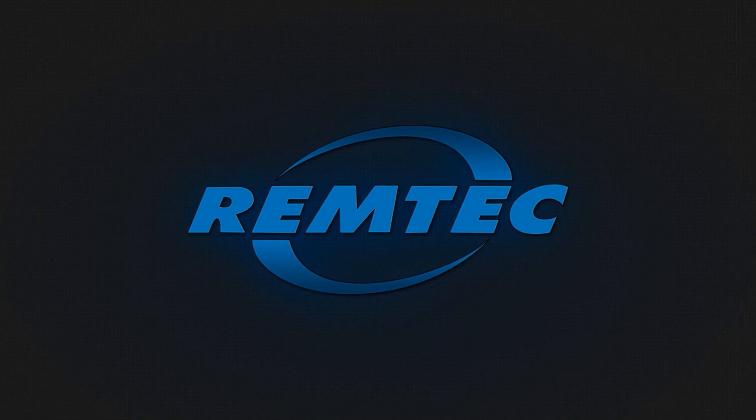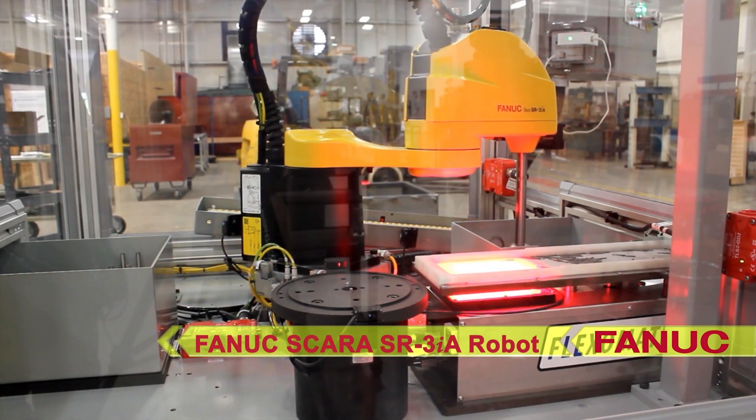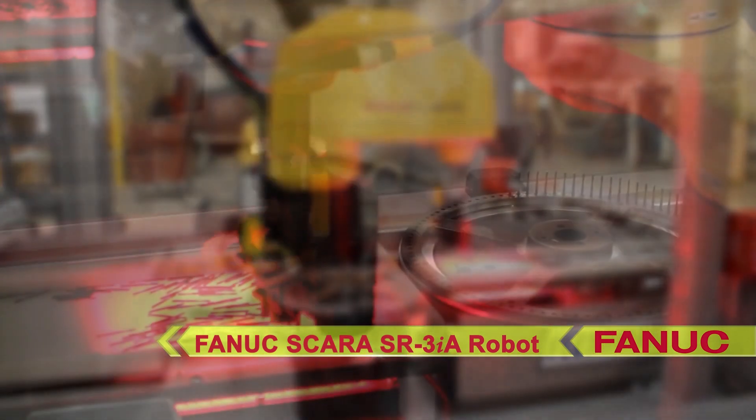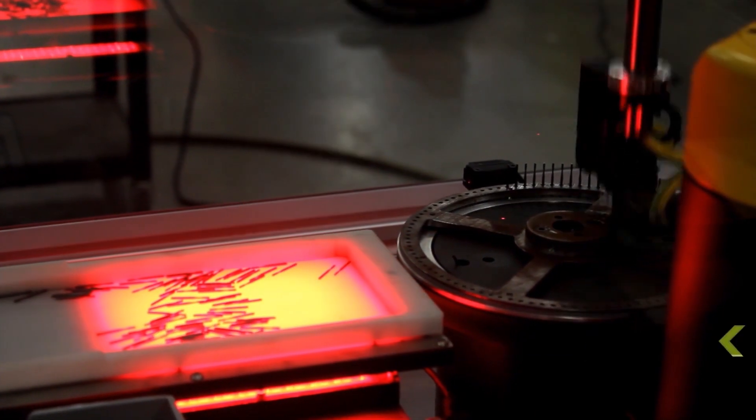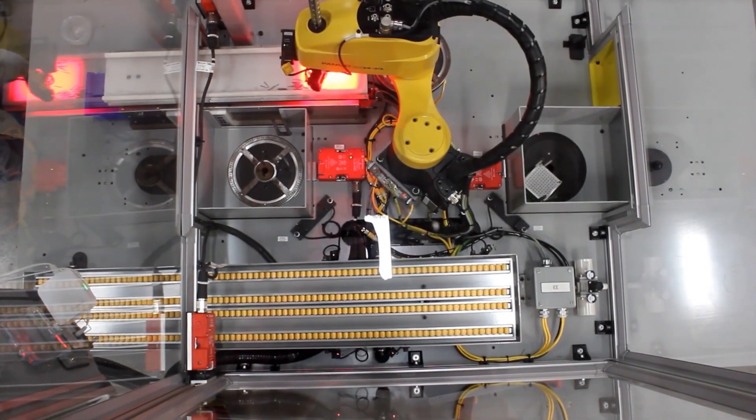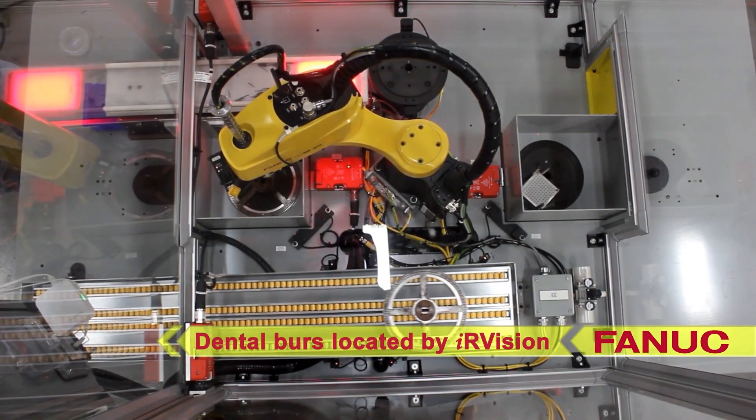A flexible part feeding system moves randomly oriented dental burrs of different shapes and sizes over a FANUC IR Vision 2D guidance system. The FANUC SR3IA SCARA robot uses IR Vision and a one axis gripper to accurately pick and orient the burrs for placement into a specific fixture at high speeds.